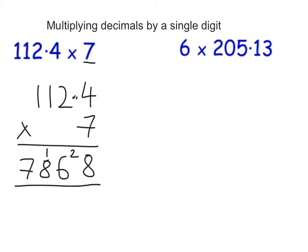Now I need to decide where the decimal point goes. We count how many digits are behind the decimal point in the question. In this question, there's only one number behind the decimal point, so we need one number in our answer behind the decimal point. So it goes between the 6 and the 8. My answer is 786.8.